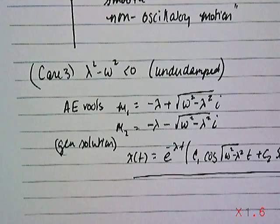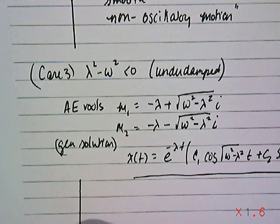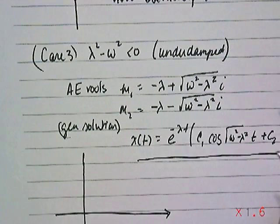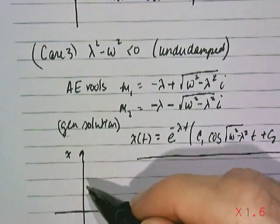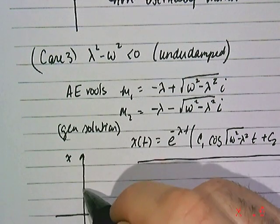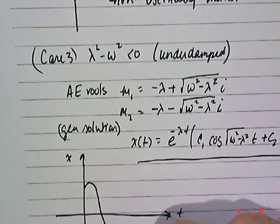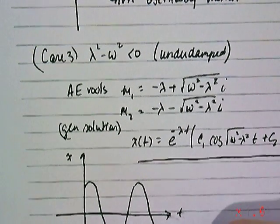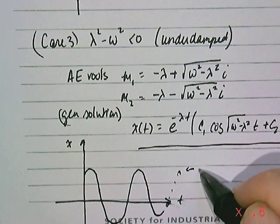And what this system looks like in an underdamped case would be the following. Let's suppose this is your system - this is time, this is the displacement. Let me draw what an undamped system would look like. It's a nice oscillatory motion.